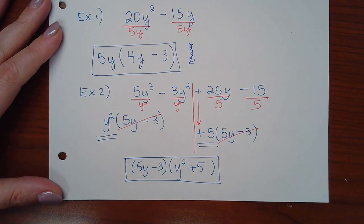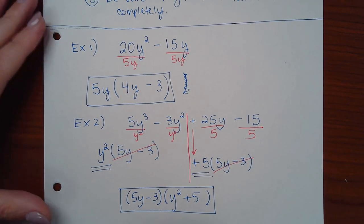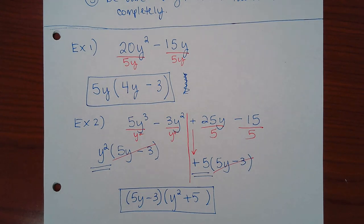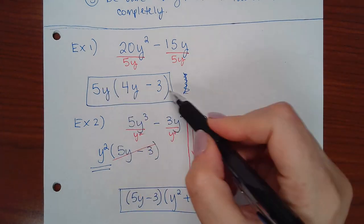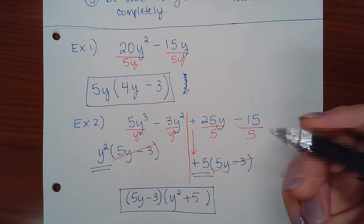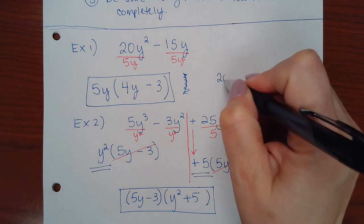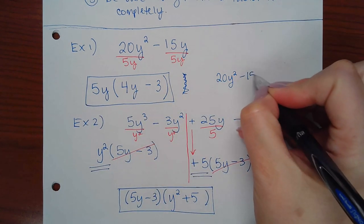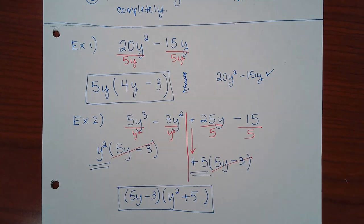You can always check your answer by multiplying out. Factoring is finding what two things multiply together to produce the original expression. Distributing (5y − 3)(y² + 5) gives 5y³ + 25y − 3y² − 15, which has the same terms as the original — just in a different order — confirming the factoring is correct.